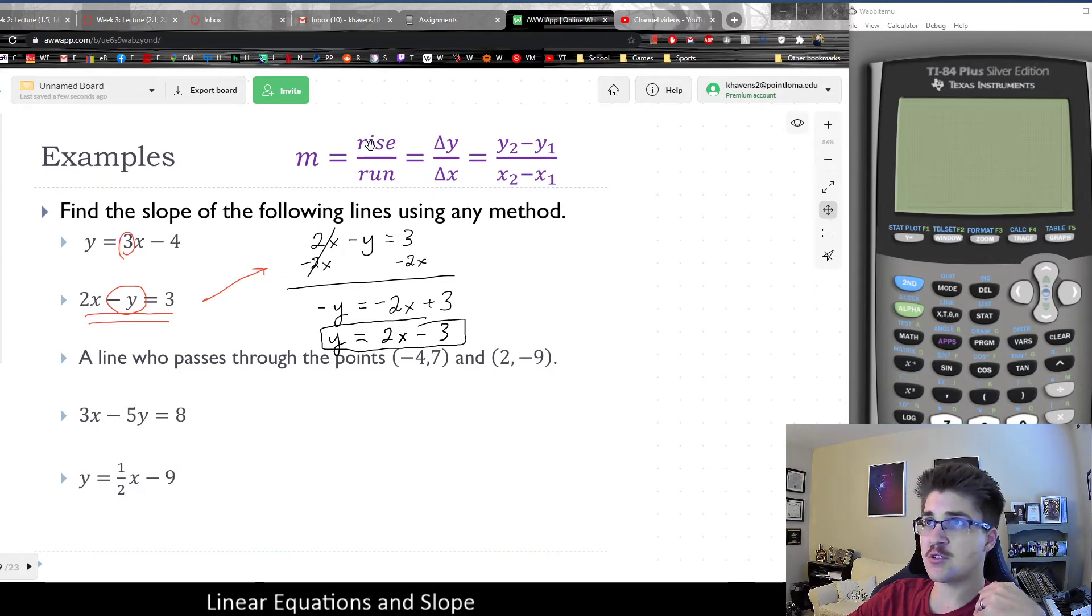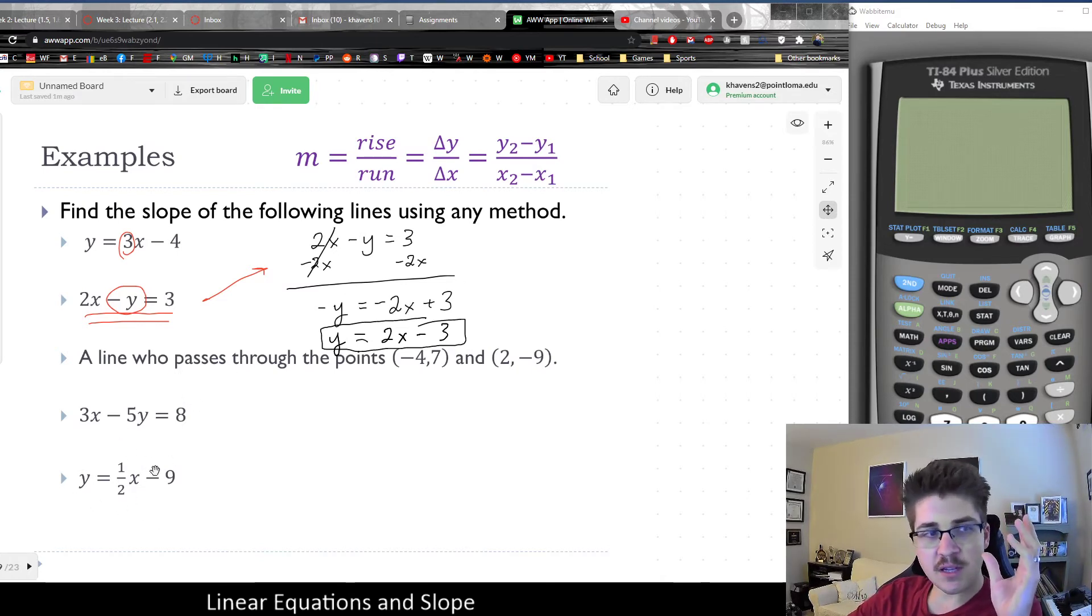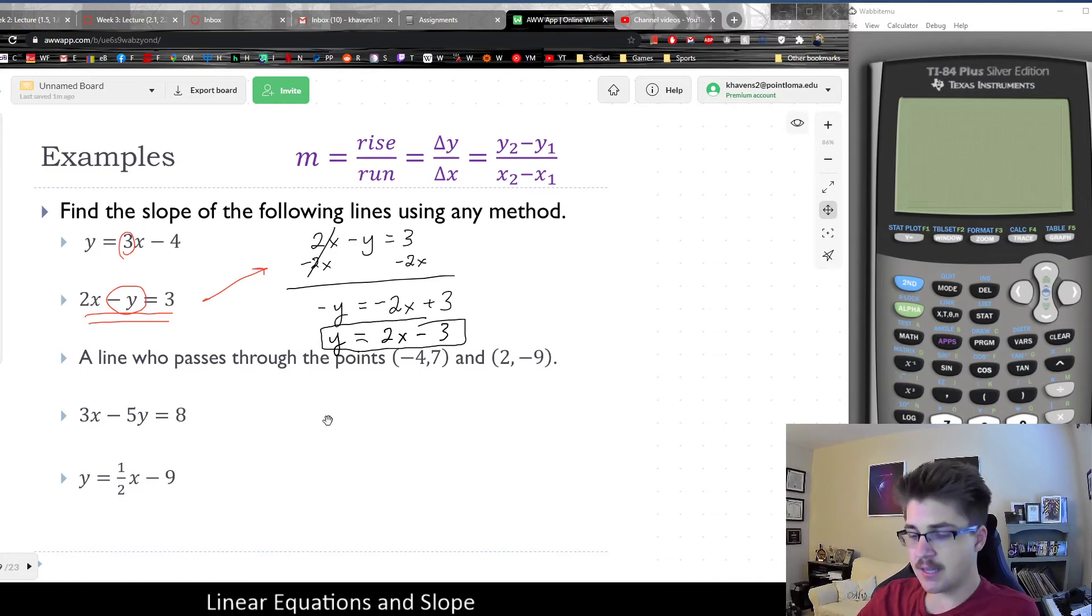If I have a graph, I would usually use rise over run. If I have an equation, I would usually solve for y because to me, that's the most direct way. Like with the last one on the slides here, notice that it's in slope intercept form because it's already solved for y. So basically the slope I know right off the bat is one half. Whereas this one, I don't know the slope yet because it's not solved for y yet.